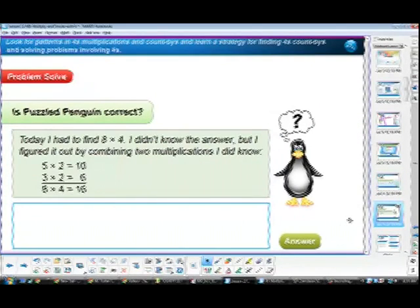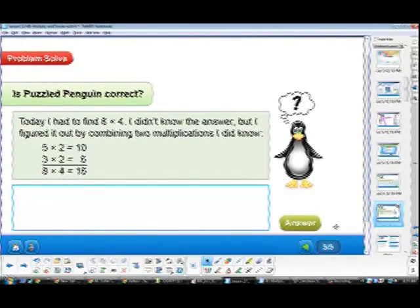Last but not least, we've got to check to see if Puzzle Penguin is correct. So this is question number 4. Today I had to find 8 times 4. I didn't know the answer, but I figured it out by combining two multiplications. I did know. I knew 5 times 2 equals 10. That's correct. 3 times 2 equals 6. And then he added them. 10 plus 6 equals 16. And he figured that was 8 times 4. Is he correct? If he's correct, say yes. If he's not correct, say no. And tell us why he's incorrect. Let's go ahead and look at the answer. The answer. He did not do it correct. It should have been 5 times 4 equals 20. And 3 times 4 equals 12. 20 plus 12 equals 32.